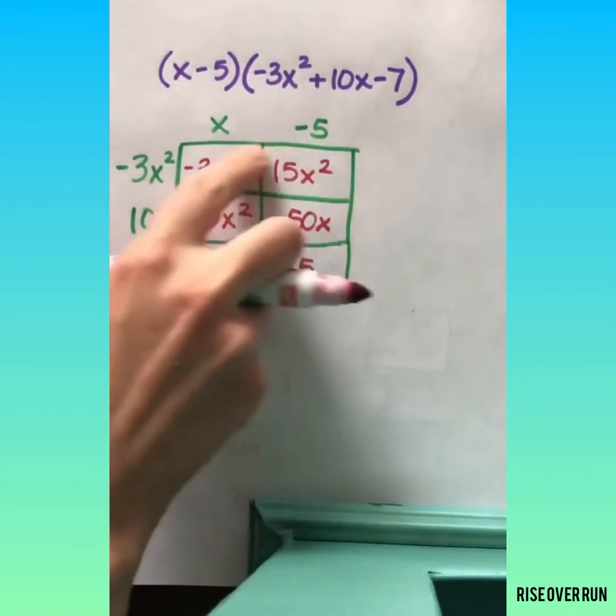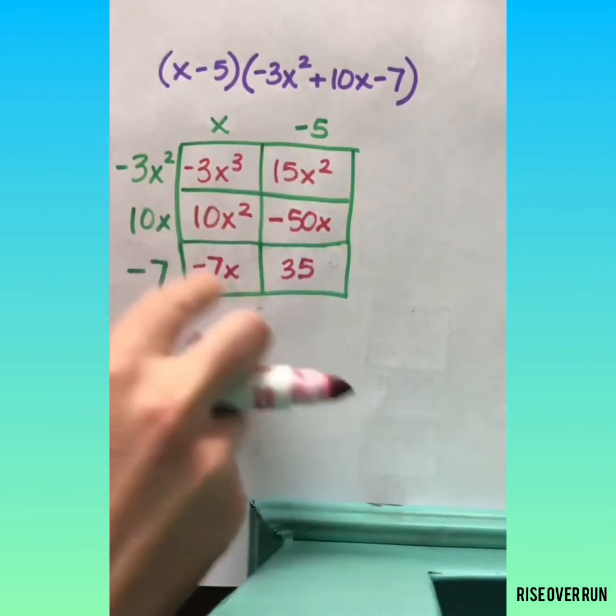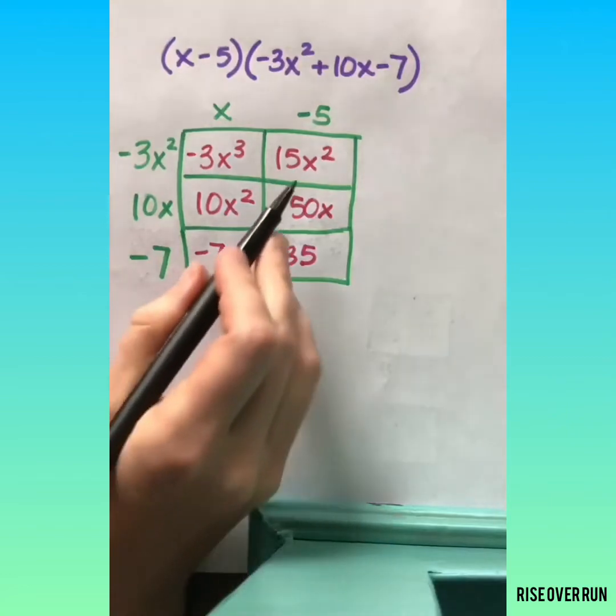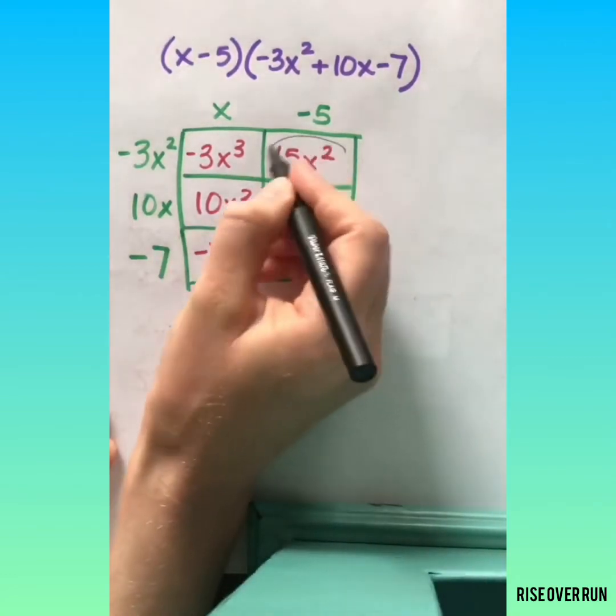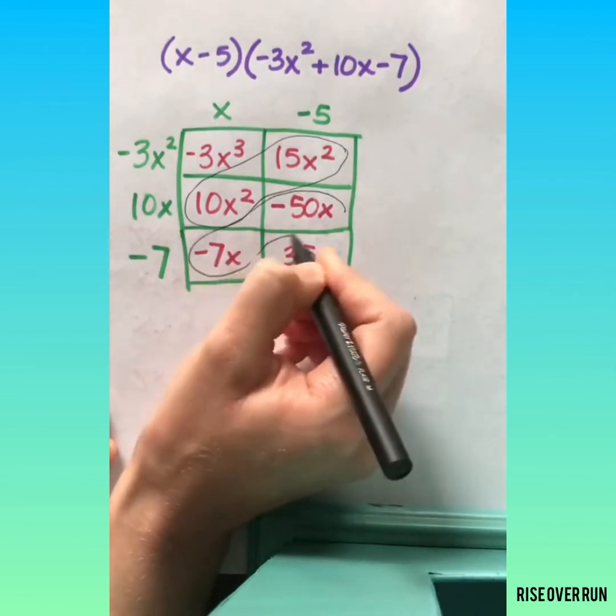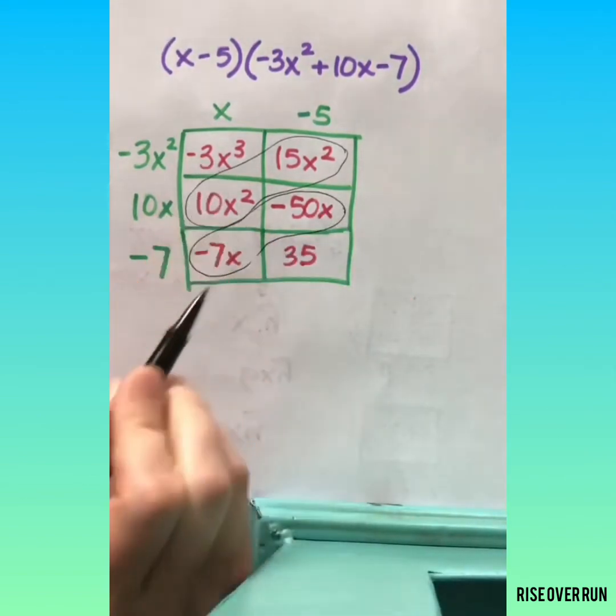Negative 5 times negative 7 is positive 35. Now we want to add all these together to get our total area or our final product. Let's go ahead and look for like terms. These are like terms. These are like terms. These are like terms. And these two are just their own thing.